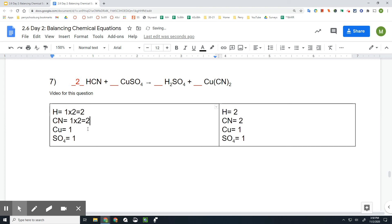So let's check after we put the first coefficient in, and yes, that's balanced. Hydrogen has two on both sides of the equation. CN has two on both sides, copper has one on both sides, and SO₄ has one on both sides.